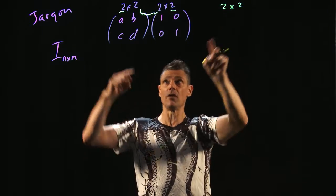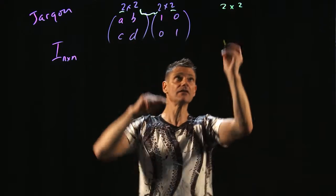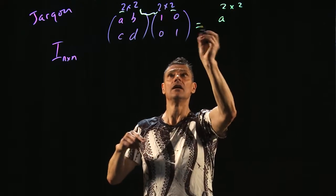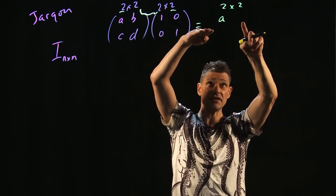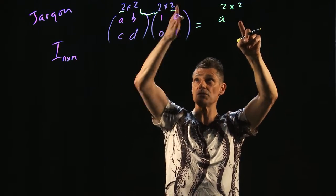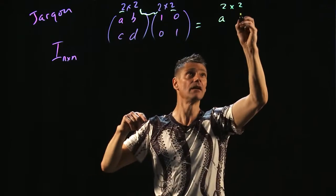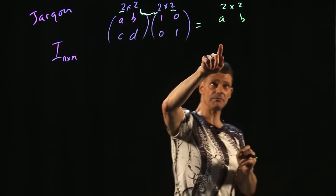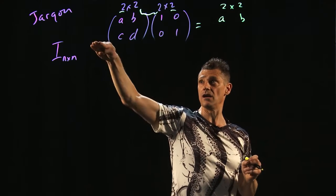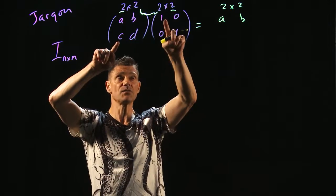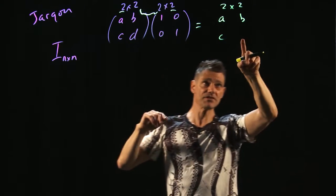For this first position right here, this is the C_1,1, first row, first column: A times 1 is A plus B times 0. This is just A. For this position here, this would be C_1,2, first row, second column: A times 0 is 0, B times 1 is B. For here, this would be the C_2,1 position, second row, first column: C times 1 plus D times 0 is C.